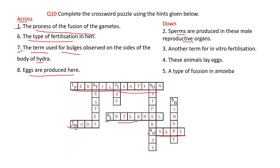Down answers: Second — sperms are produced in these male reproductive organs, starting with 'T' — answer is testes. Third — another term for in vitro fertilization, starting with 'I' — answer is IVF. Fourth — animals that lay eggs, starting with 'O' — answer is oviparous. Fifth — a type of fission in amoeba, starting with 'B' — answer is binary.